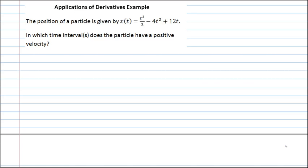Here is a basic physics application of derivatives. The position of a particle is given by the function x of t equals t cubed over 3 minus 4t squared plus 12t. In which time interval or intervals does the particle have a positive velocity?